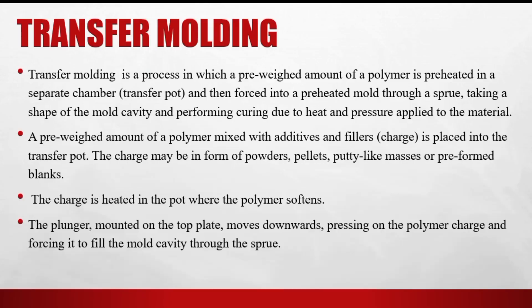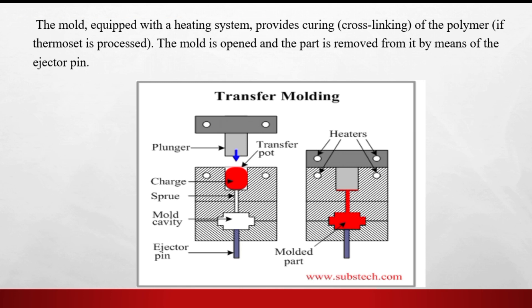Then comes transfer molding. Transfer molding is a process in which a pre-weighed amount of polymer is preheated in a separate chamber. Force is applied on it and with the help of a sprue, it flows into the mold cavity where heat and pressure shape it. In the diagram, the material is charged with a plunger and pressure applied; the preheated material fills the mold cavity, and the product is removed with the help of an ejector pin.